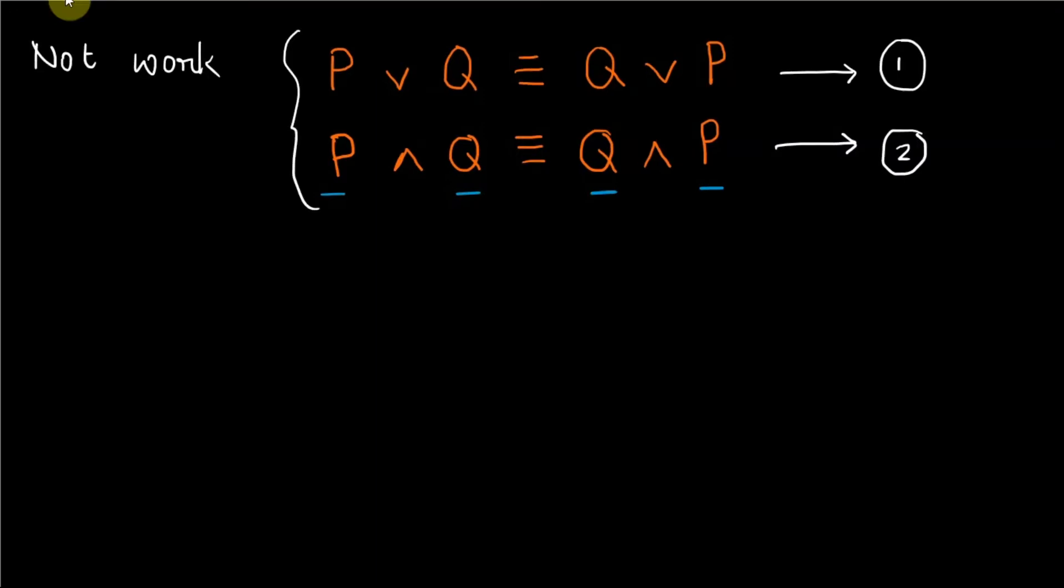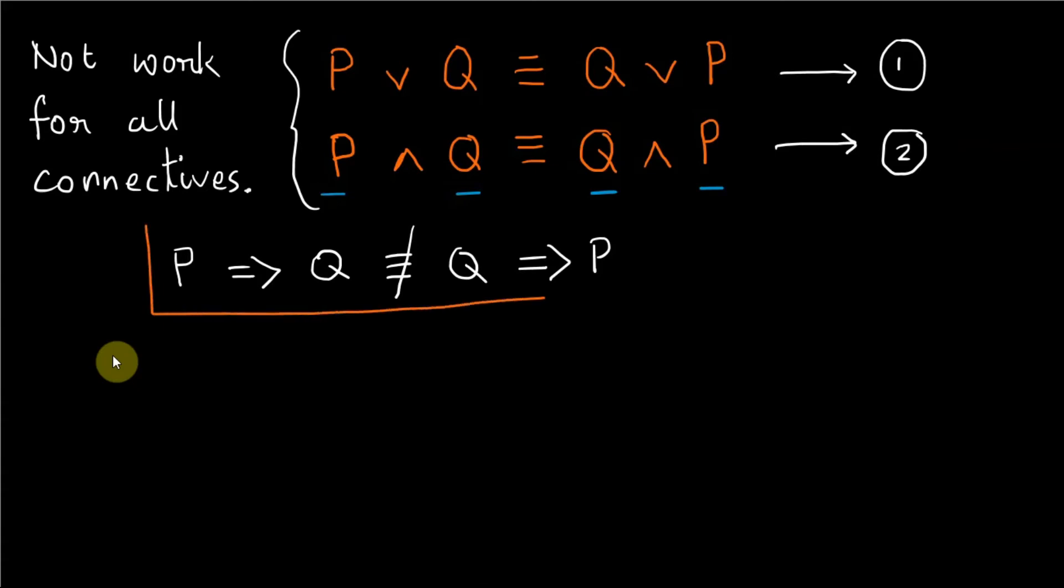It means there are some connectives for which commutative property does not work. For example, P implies Q is not equivalent to Q implies P.